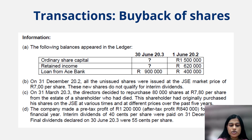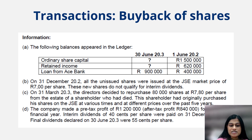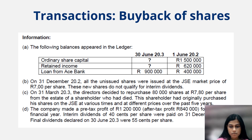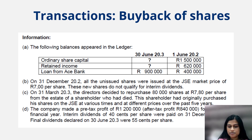On 31st March 2003, the directors decided to repurchase 80,000 shares at 7.80 rand per share from the estate of a shareholder who had died. This shareholder had originally purchased his shares at different times and prices over the past five years. The company made a pre-tax profit of 1.2 million and an after-tax profit of 840,000. Interim dividends of 40 cents per share were paid on 31st December and final dividends were declared at 55 cents per share — note that these are quoted in cents, not rands.